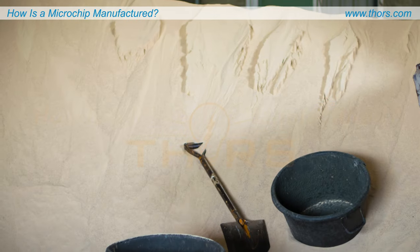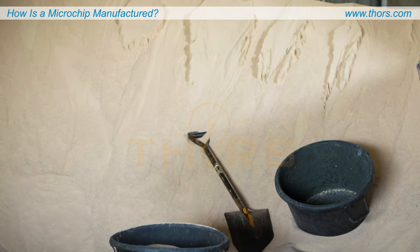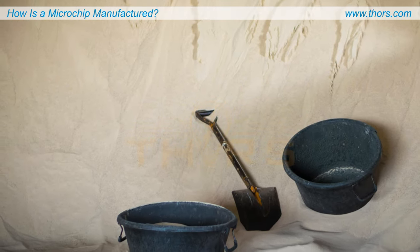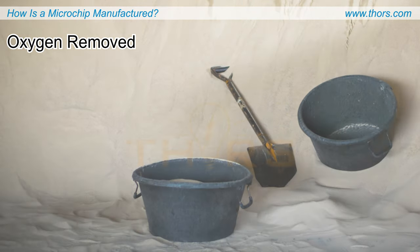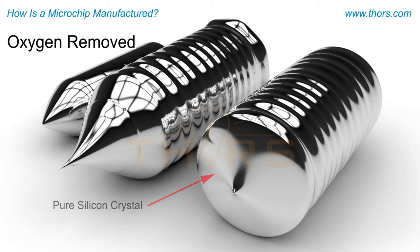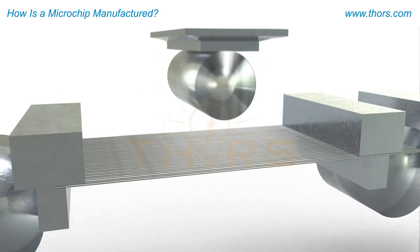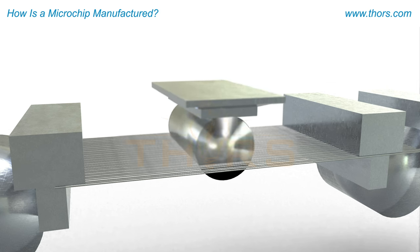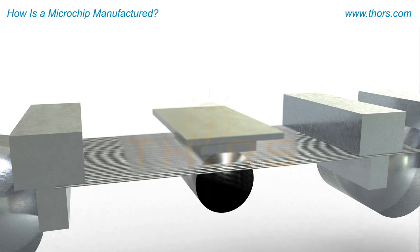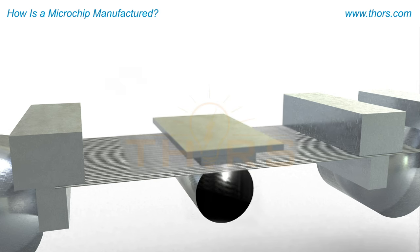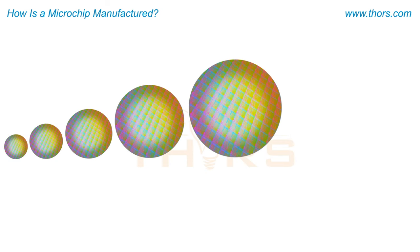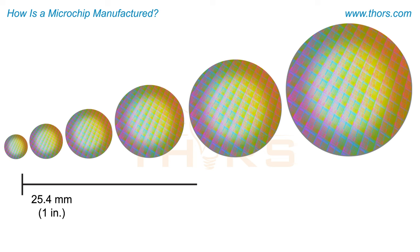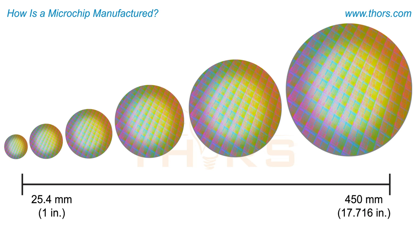The manufacturing process of a semiconductor device begins with sand, which contains silicon dioxide. Oxygen is then removed from the sand to transform it into pure silicon crystal. The silicon crystal is then transformed into silicon wafers of the desired size. Typically, silicon wafers are less than a millimeter thick and have a diameter of 25.4 millimeters to 450 millimeters.